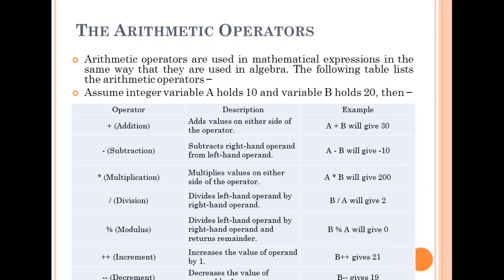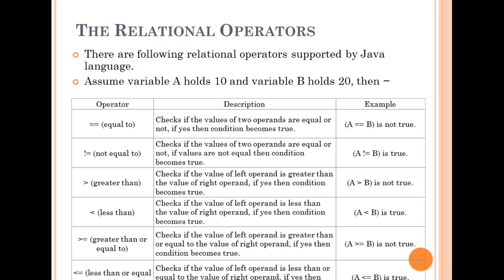Multiplication, division, modulus, increment, and decrement. A multiplies B gives 200. B divided by A gives you 2 (that's 20 by 10). B percentage A will give 0. B plus plus incrementing B from 20 plus 1, that's 21. Decrementing B from 20, that's 20 minus 1, equal to 19. That's pretty much about the arithmetic operators in Java.